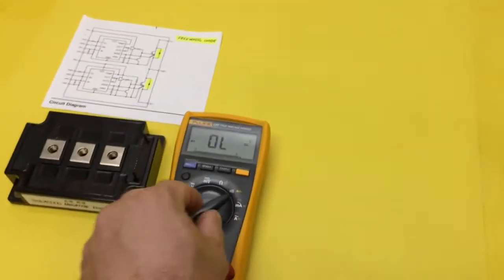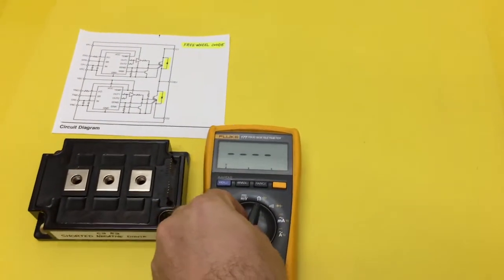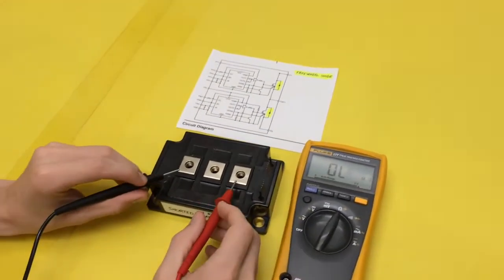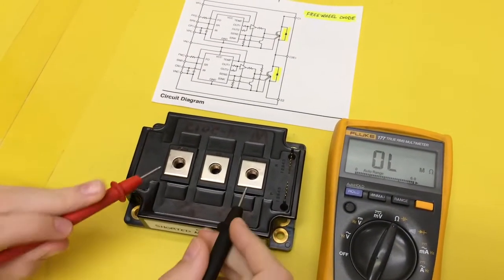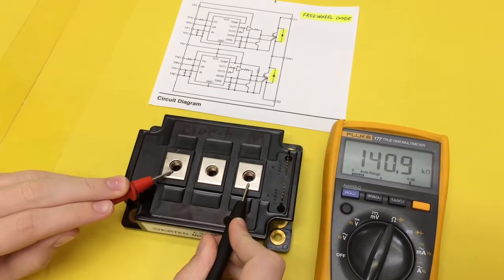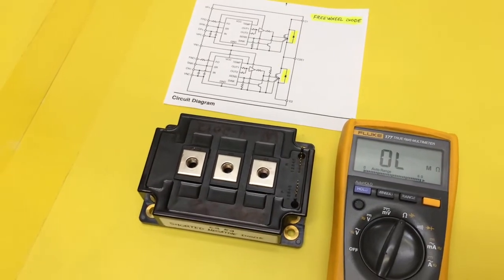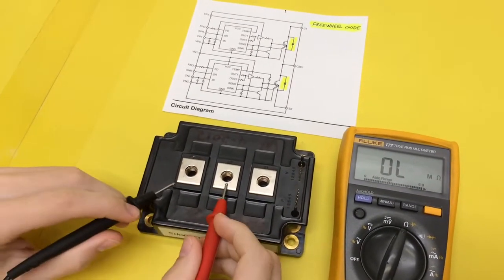We'll also do it on ohms. Do the same test. Start with C1E1. You should read OL one direction and somewhere in the K, over 100,000 ohms, the other direction.